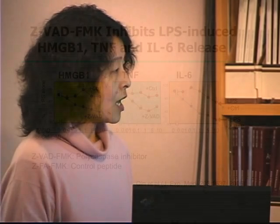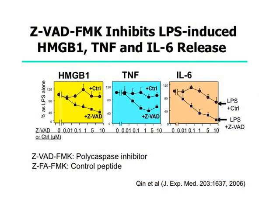The first approach we took was to see whether inhibiting apoptosis also inhibits HMGb1 release. We used macrophage cell cultures and a general caspase inhibitor, ZVAD-FMK, along with a control peptide.